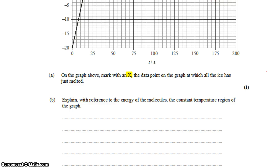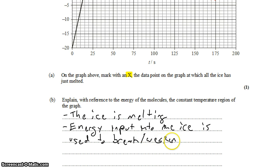Explain with reference to the energy of the molecules the constant temperature region of the graph. In that region, the ice is melting. Energy input into the ice is used to break or weaken intermolecular bonds. So the energy that we're pumping into the system at this point is no longer heating the ice because it's at its melting point. At this point, the energy that we put in is being used to separate the ice molecules from their lattice, break those intermolecular bonds.